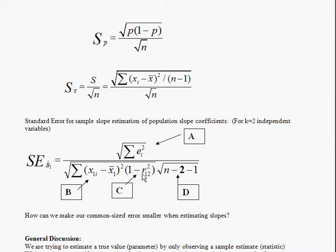Part C, the middle term in the denominator, is r-squared-1-2, the squared correlation coefficient between the two explanatory variables. This addresses multicollinearity — a high degree of correlation between explanatory variables. If this correlation coefficient is close to 1 or minus 1, then (1 minus r-squared) becomes close to 0, the denominator approaches 0, and the standard error gets very large. So if you have a high standard error, it could be because some of your explanatory variables are highly correlated with each other. Finally, Part D involves degrees of freedom — n minus k, where k is the number of explanatory variables. A larger sample size, all else equal, will make the standard error go down.